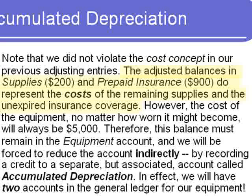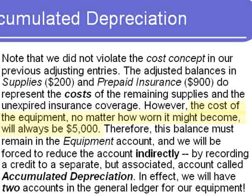Prepaid insurance has expired partially, so what remains in the prepaid insurance account is nine months' worth of coverage — the $900 balance equals the cost of that remaining coverage. The cost of equipment, however, no matter how worn out it might become, will always be $5,000. So this balance must remain in the equipment account according to the cost concept, and we are forced to reduce the account indirectly by recording a credit not to the equipment account, but to a separate associated account called accumulated depreciation.